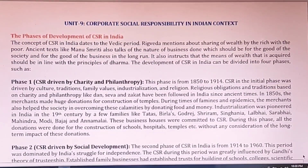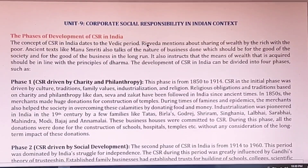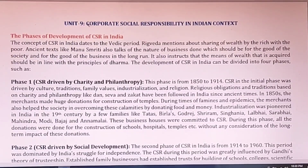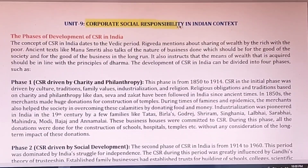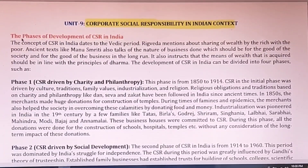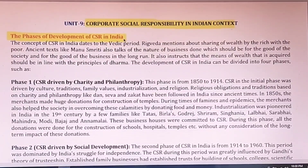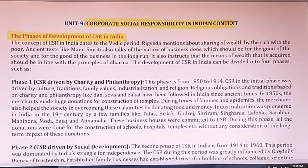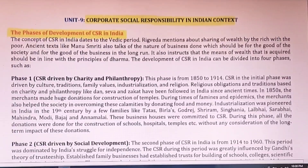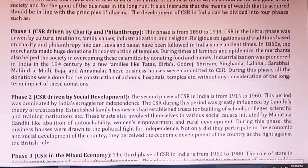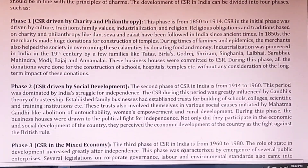Unit 9 is on Corporate Social Responsibility in the Indian context. The different phases of development of CSR in India are important. There are four phases. The first phase was from 1850 to 1914, during British rule. Rich families like Tata, Birla, and Godrej used to give donations and help in the freedom movement — so CSR existed unofficially during this period.